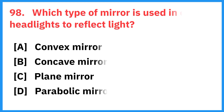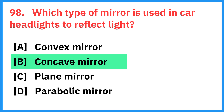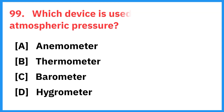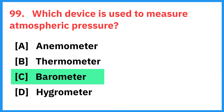Which type of mirror is used in car headlights to reflect light? Right answer is concave mirror. Which device is used to measure atmospheric pressure? Right answer is barometer.